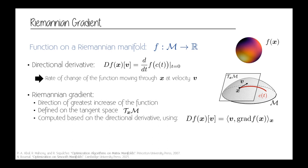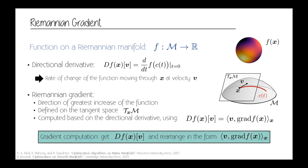The gradient has the same meaning as in Euclidean space — it gives the direction of greatest increase of the function. For Riemannian manifolds, the gradient is defined on the tangent space at x. We don't have a simple closed-form solution as in Euclidean space; we use the relationship between directional derivative and gradient, where the inner product is defined based on the Riemannian metric. The recipe: compute the directional derivative, arrange it in a form that gives you the inner product, and identify your gradient.